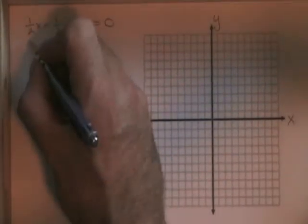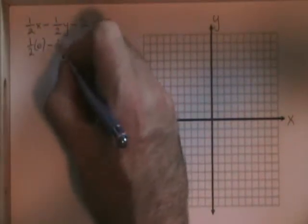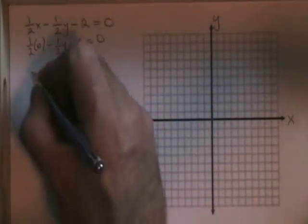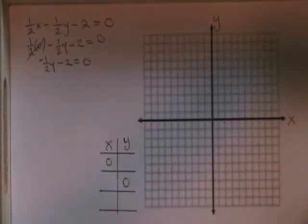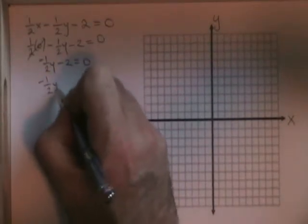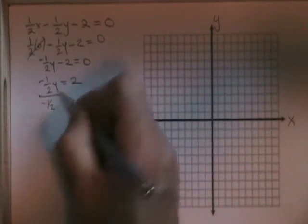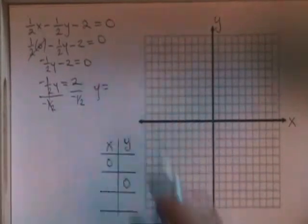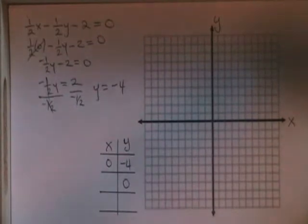If x equals zero, I have one-half of zero minus one-half of y minus two equals zero. This cancels. I have negative one-half y minus two equals zero. If I move the two to the other side, I have negative one-half y equals two. And if I divide both sides by negative one-half, these cancel, and y is equal to two divided by negative one-half, which is negative four. I found my first intercept.